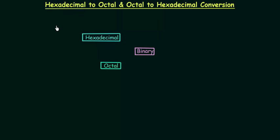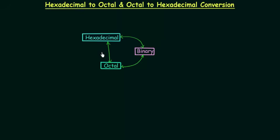The last type of conversion is hexadecimal to octal and octal to hexadecimal conversion. We already know how to convert hexadecimal to binary and binary to hexadecimal, and also octal to binary and binary back to octal. However, if you want to convert hexadecimal to octal or octal to hexadecimal, direct conversion is not possible.